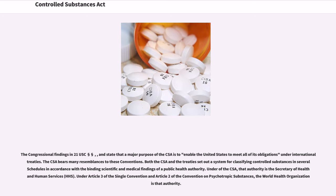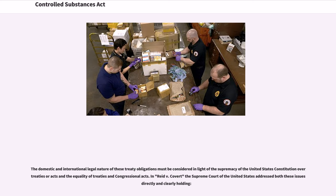The CSA bears many resemblances to these conventions. Both the CSA and the treaty set out a system for classifying controlled substances in several schedules in accordance with the binding scientific and medical findings of a public health authority. Under the CSA, that authority is the Secretary of Health and Human Services (HHS). Under Article III of the Single Convention and Article II of the Convention on Psychotropic Substances, the World Health Organization is that authority. The domestic and international legal nature of these treaty obligations must be considered in light of the supremacy of the United States Constitution over treaties or acts and the equality of treaties and congressional acts.